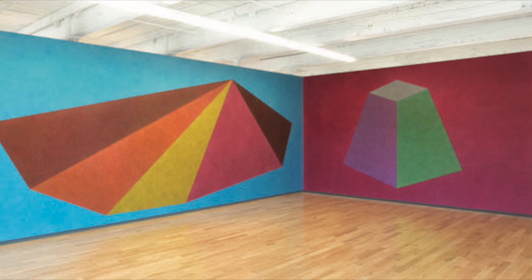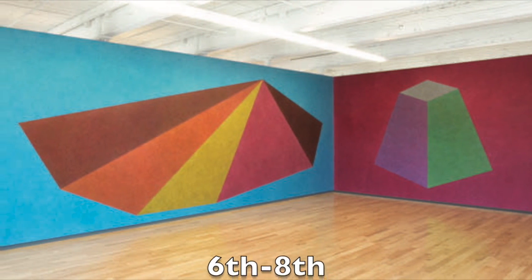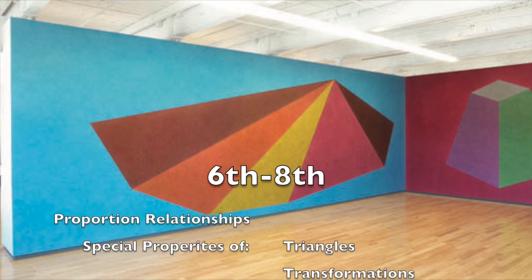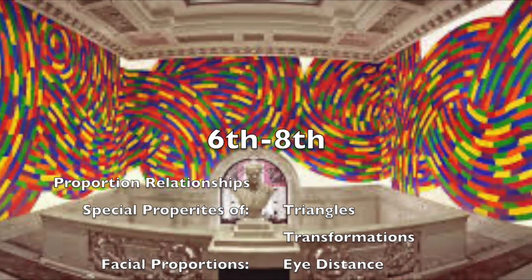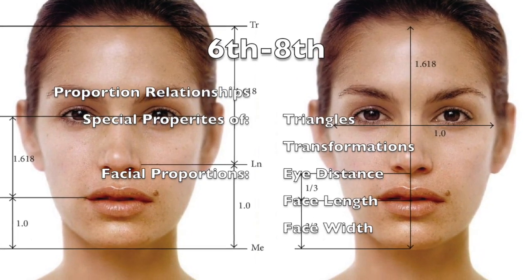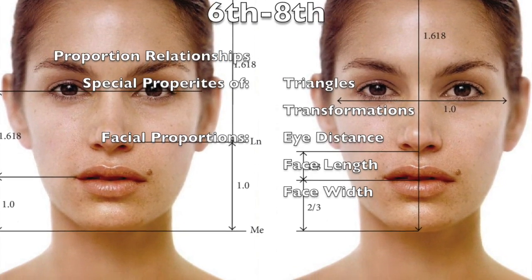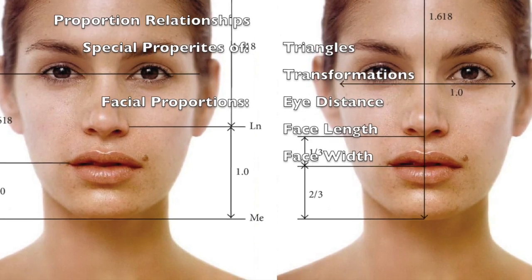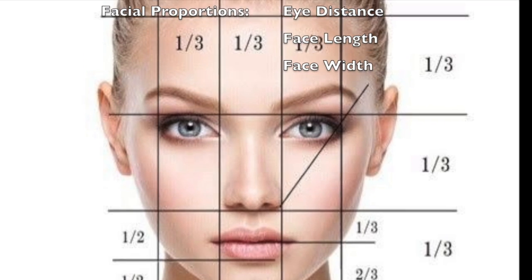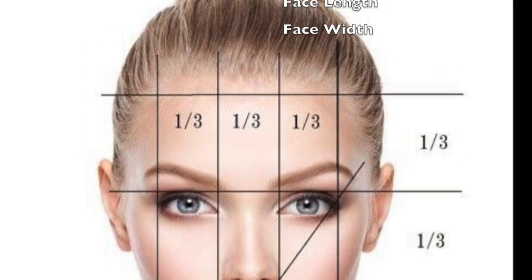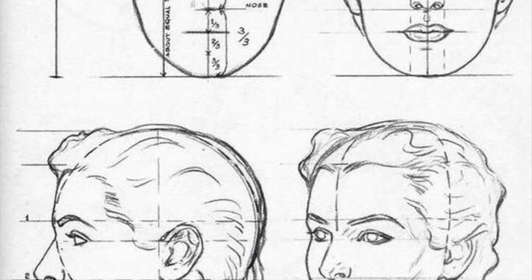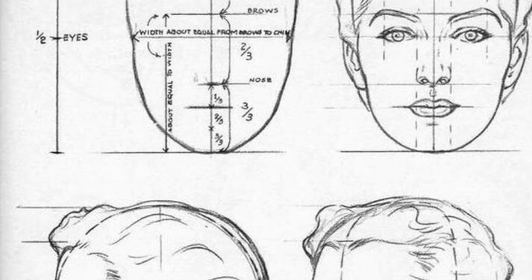For students in grades 6-8, they can focus on directions with references to proportional relationships, special properties of triangles, and transformations. Students can also explore the proportional relationships within a person's face — how widely set are the eyes, what is the variation among people's face lengths, and does it relate to the width of their faces? Have students conduct research online, in art books, or experimentally by measuring the faces of people they know and combining their data.